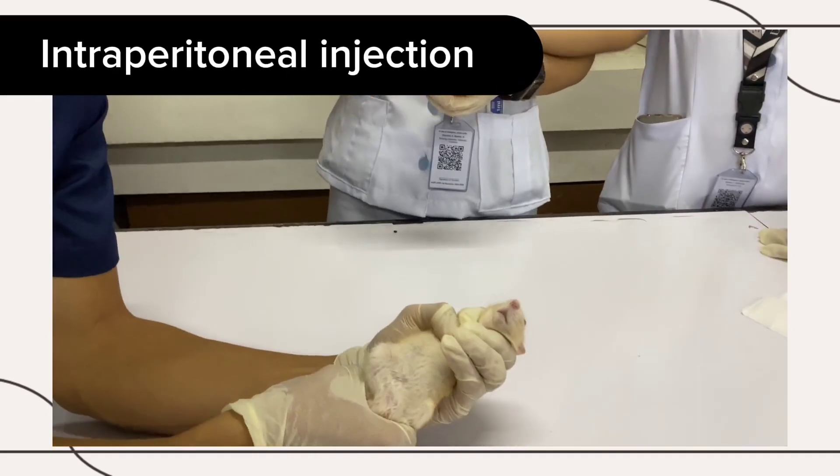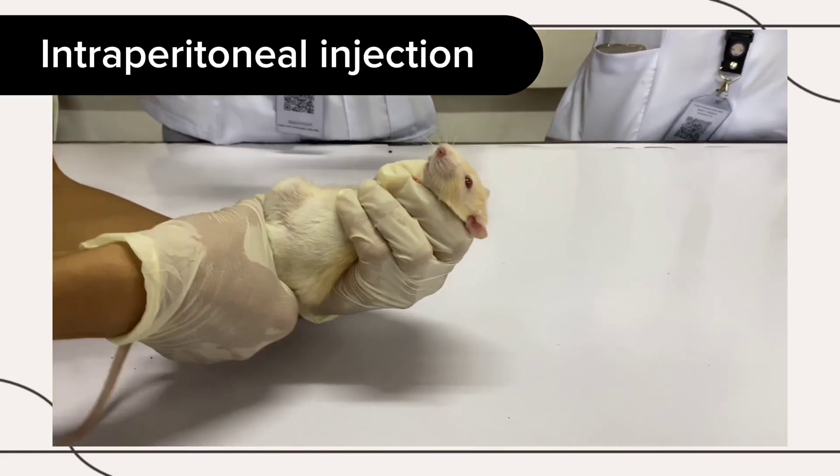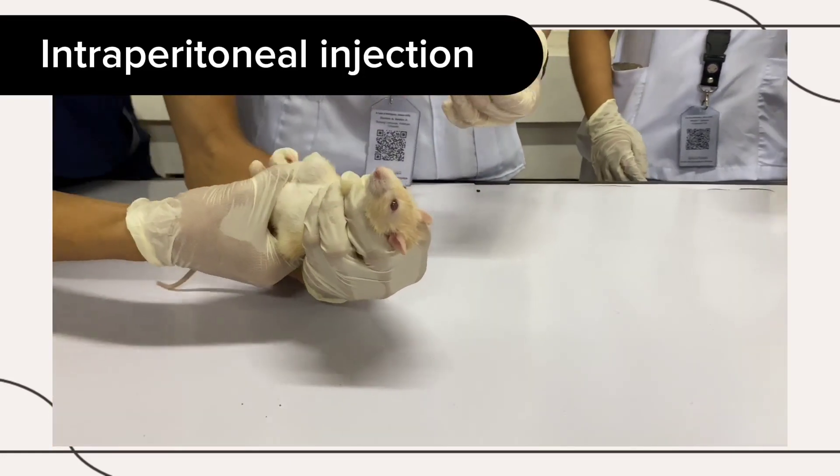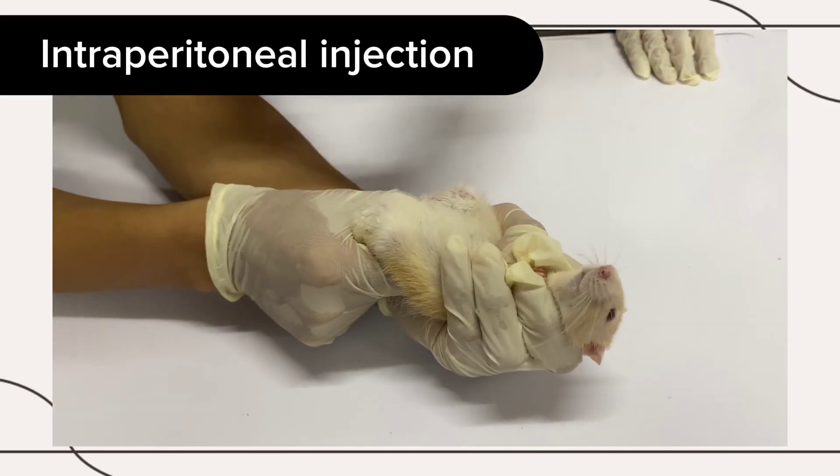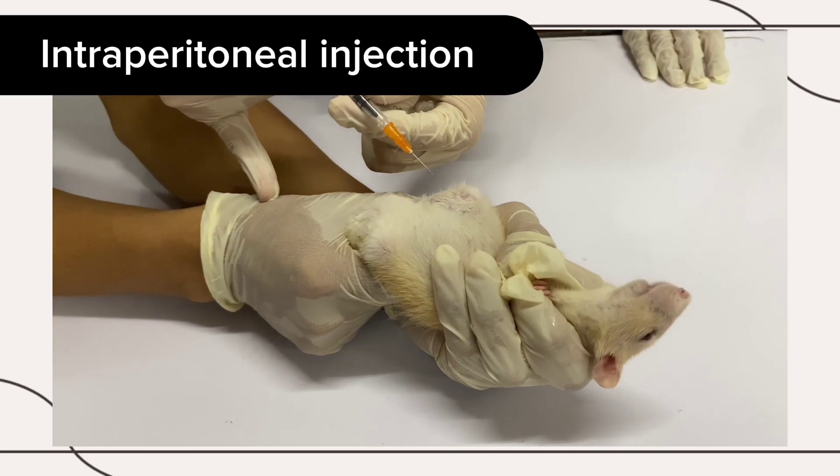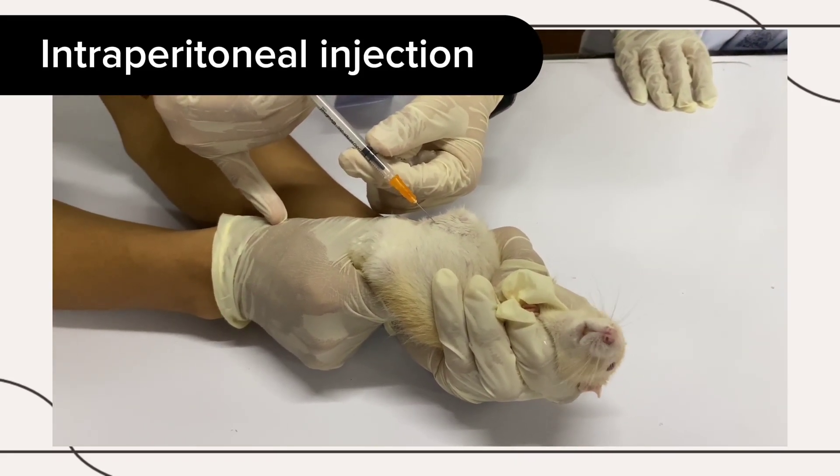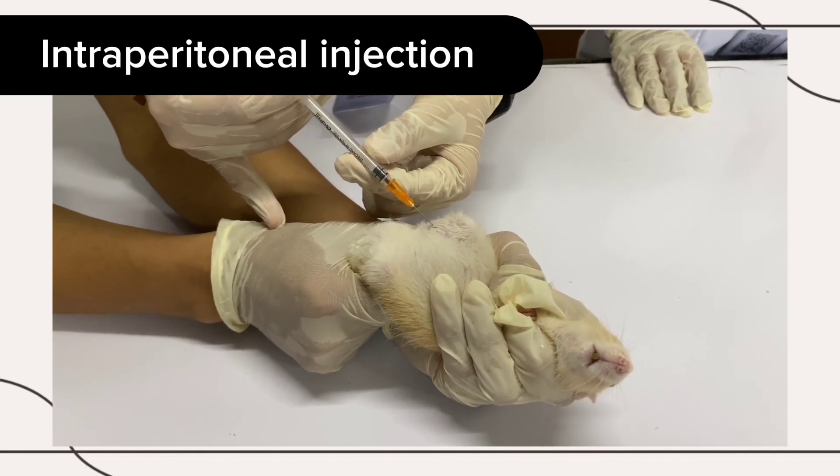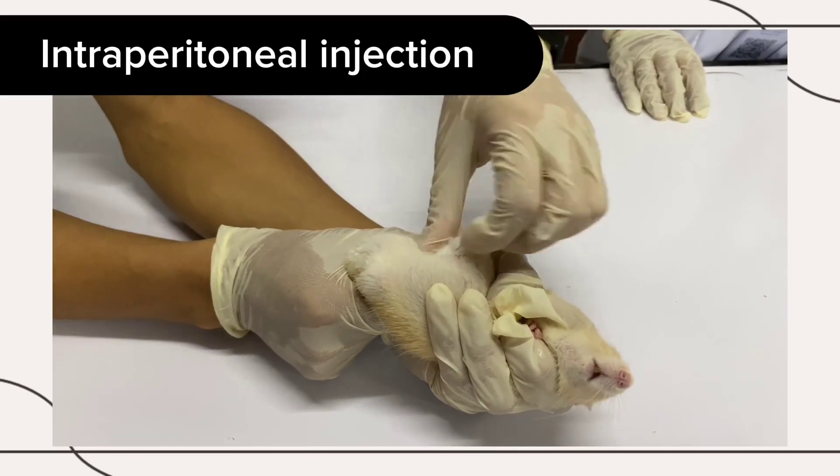Intraperitoneal Injection: This method involves injecting a substance into the peritoneal cavity of the mouse. Prepare the injection site by cleaning it with alcohol. Locate the midline of the abdomen. Insert the injection slightly on the third quadrant, avoiding the organs. Slowly inject the substance and remove the needle and gently massage the injection site.